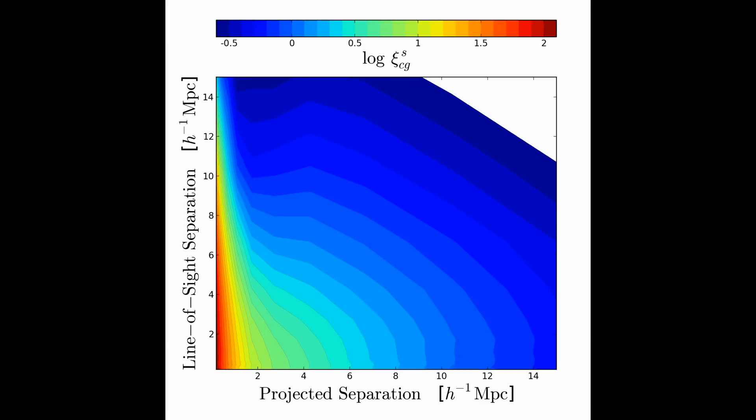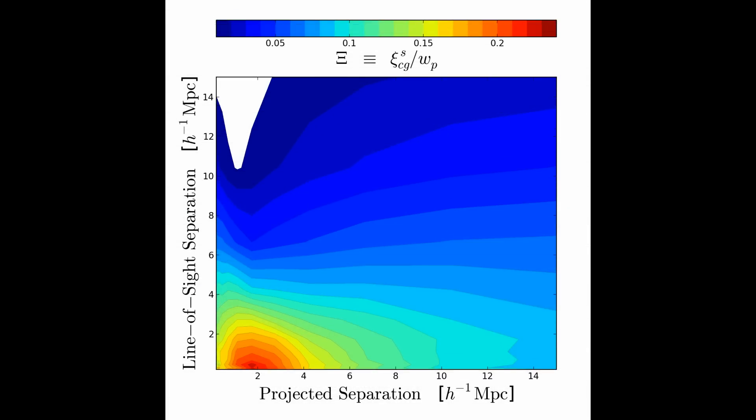The redshift space cluster-galaxy cross-correlation function is a comprehensive characterization of the statistical relation between clusters and galaxies, influenced by both the real space cross-correlation and the peculiar velocities induced by the cluster gravitational potential.